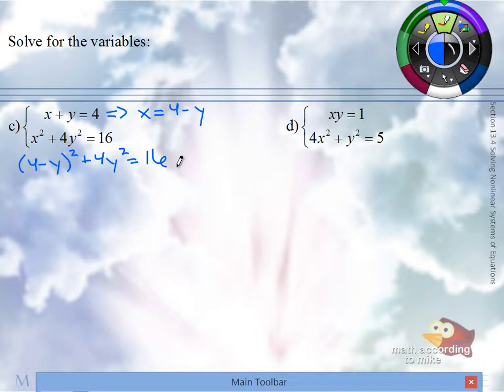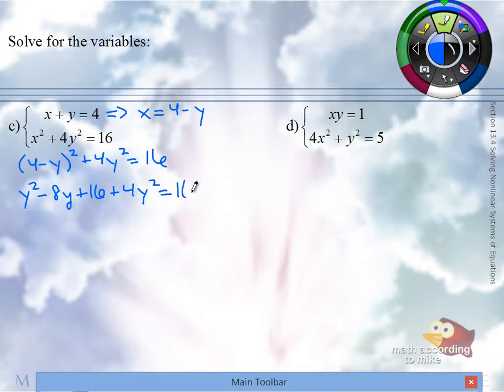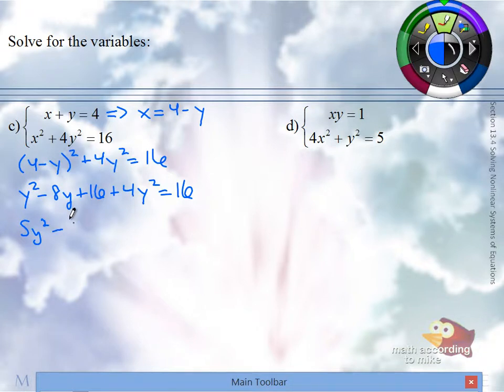What is (4 minus Y) quantity squared? We have Y squared plus (4 minus Y) squared on the same side. We have 16 on both sides — those combined to give you 0.